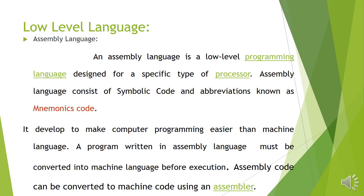Another type of low level language is assembly language. Assembly language is an intermediate language — not a totally machine based language. It is a low level programming language designed for a specific type of processor. Assembly language consists of symbolic code and abbreviations known as mnemonics code. Mnemonics code are basically symbols and different types of abbreviations used in assembly language. It was developed to make computer programming easier than machine language.